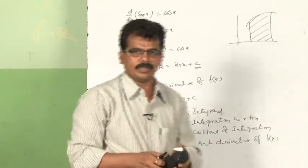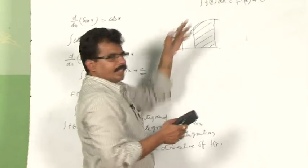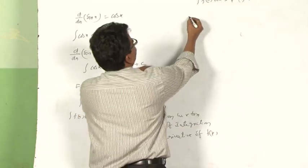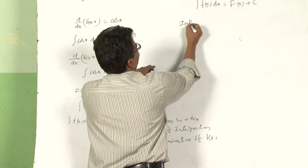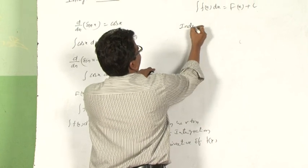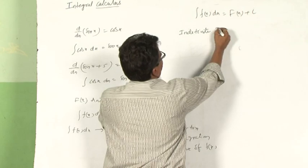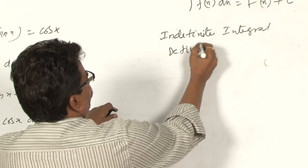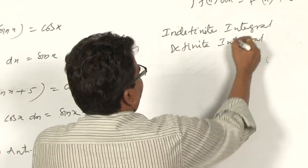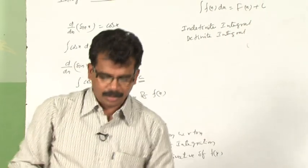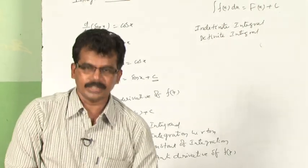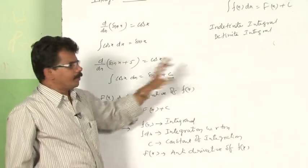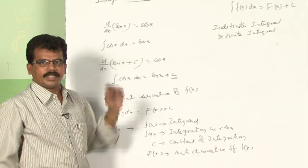There are two types of integrations: indefinite integral and definite integral. Integration is used to find the area bounded by the curve. Since there are so many uses for integration — in science, technology, engineering, economics, and many other fields — it is very important. Now let us see how to find integrations of some important functions.